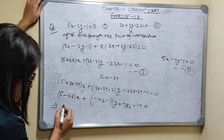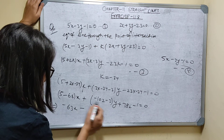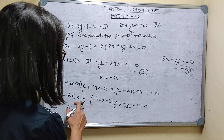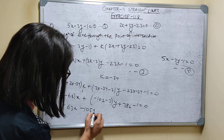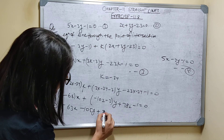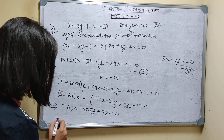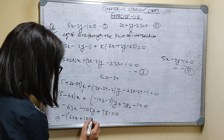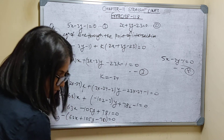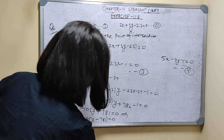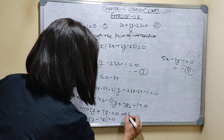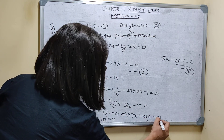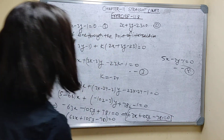5 minus 68 gives minus 63x, and minus 105y plus 781 equals 0. Taking out the common factor of minus 1, we get: 63x plus 105y minus 781 equals 0. This is the required equation — this is the answer. Thank you.